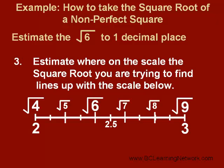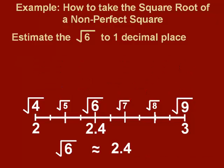Now, let's put the two scales together and find out where the square root of 6 would fall. It looks like the square root of 6 lines up nicely with 2.4. So, this would be a good one decimal place estimate for root 6: 2.4.